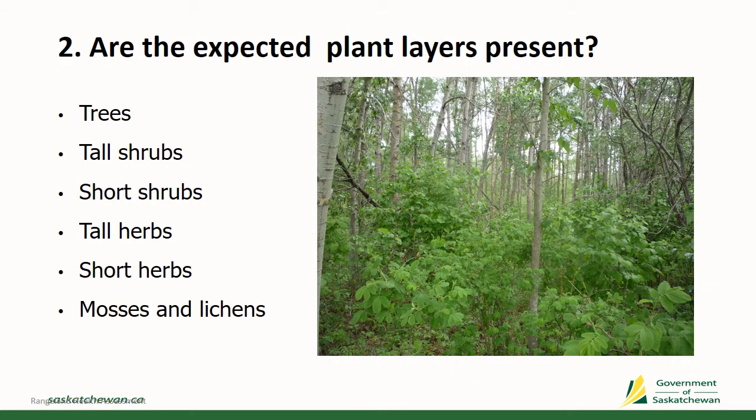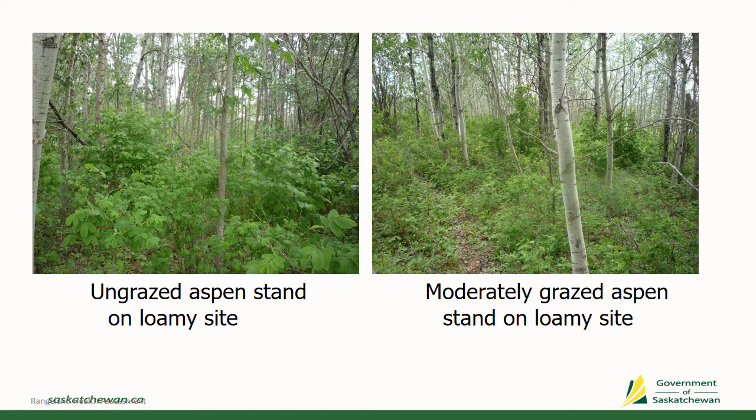Question two asks: are the expected plant layers present? Forest communities have a number of layers — naturally, we would expect the tree layer, but the understory will have tall shrub and short shrub layers, along with tall herb and short herb layers, and then moss and lichens on the forest floor. With grazing, we can get a reduction or elimination in one or more of these layers. In this example, you can see a decline in the tall shrub and short shrub layers under heavy grazing in an aspen stand on a loam site.